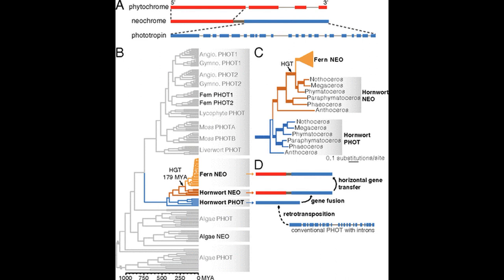Ferns have received neochrome from hornworts. Neochrome is a fusion between a phytochrome and a phototropin. Most plants have phototropin receptors, which enables them to detect and seek more light. However, phototropins can only sense blue light, while phytochromes are red light detecting. This fusion in neochrome makes it able to detect both red and blue light, enabling better detection of light under low light conditions. The original fusion occurred in hornworts, but neochrome was transferred to ferns about 180 million years ago. The researchers suggested that this enabled ferns to thrive and diversify in the shaded environment under the canopy of flowering plants.